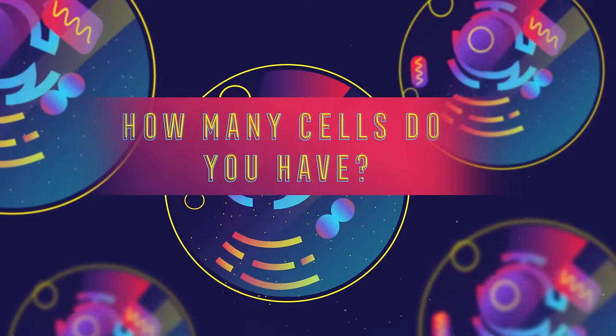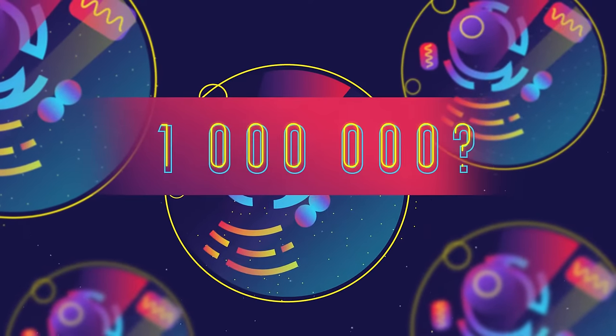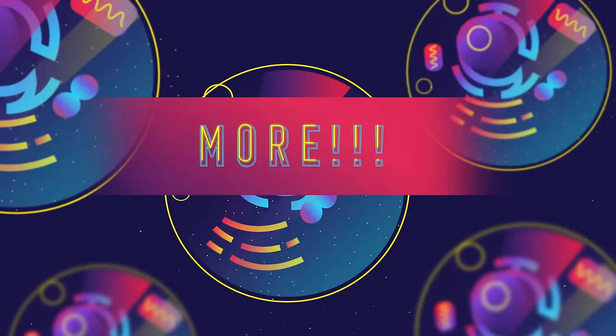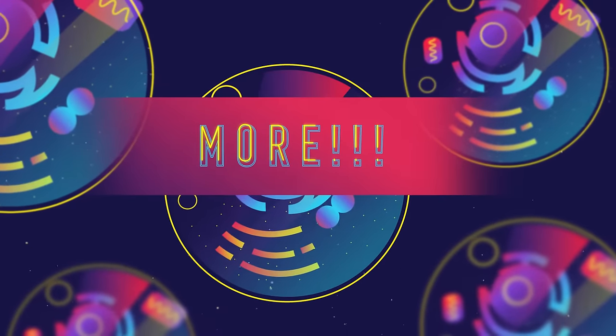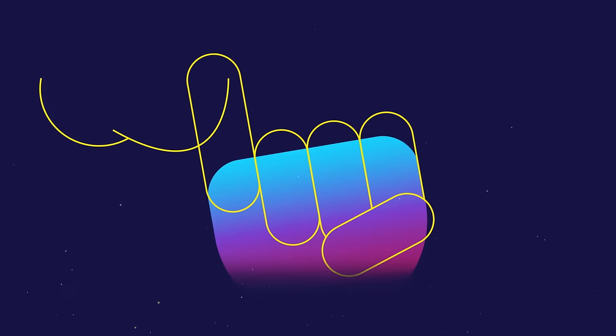So how many cells do you think you have in your body? A thousand? A million? A million million? More? We contain around 50 trillion cells. Have a look at your little finger. There's probably about 10 billion cells in there.